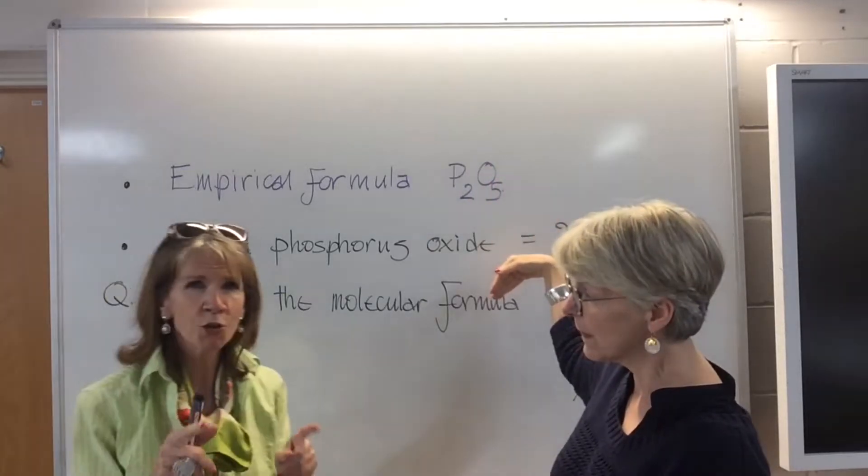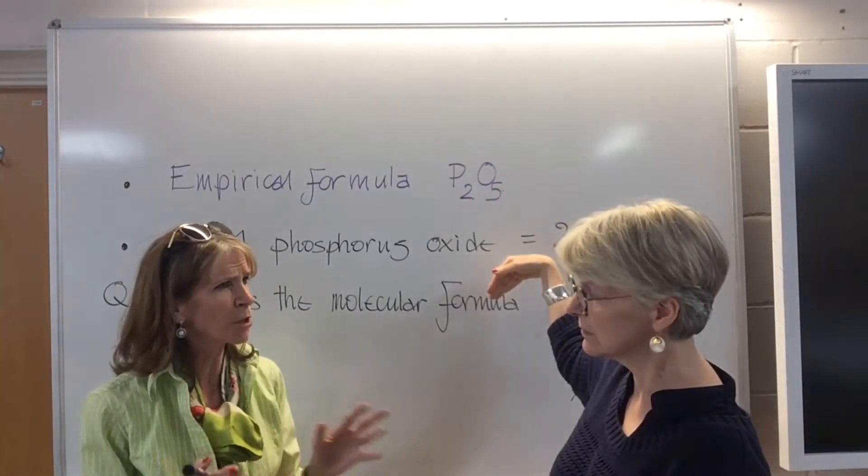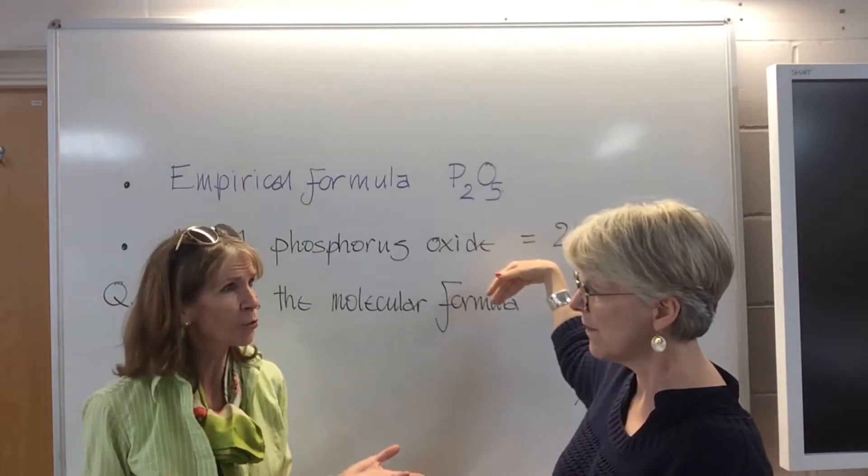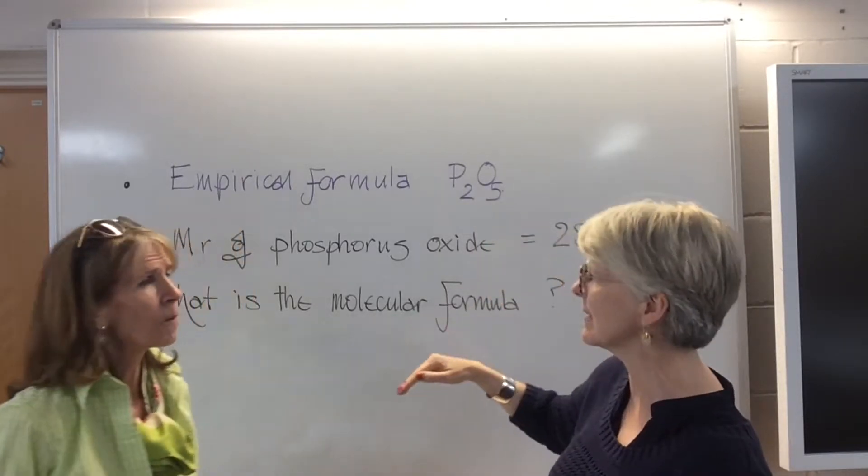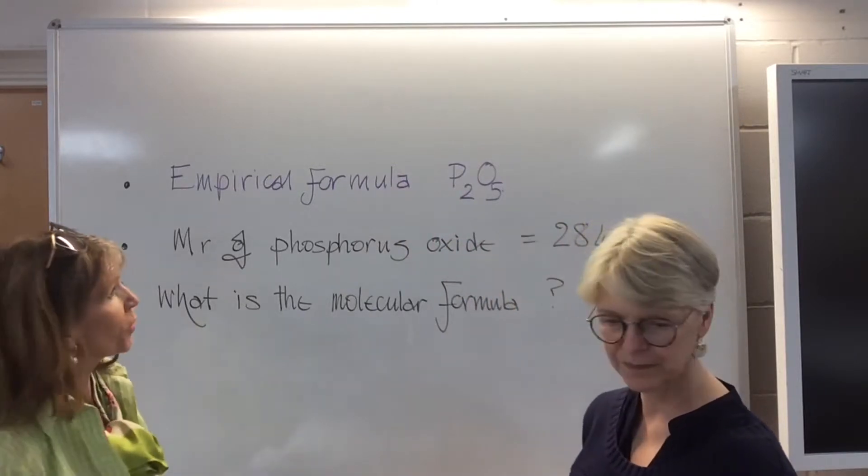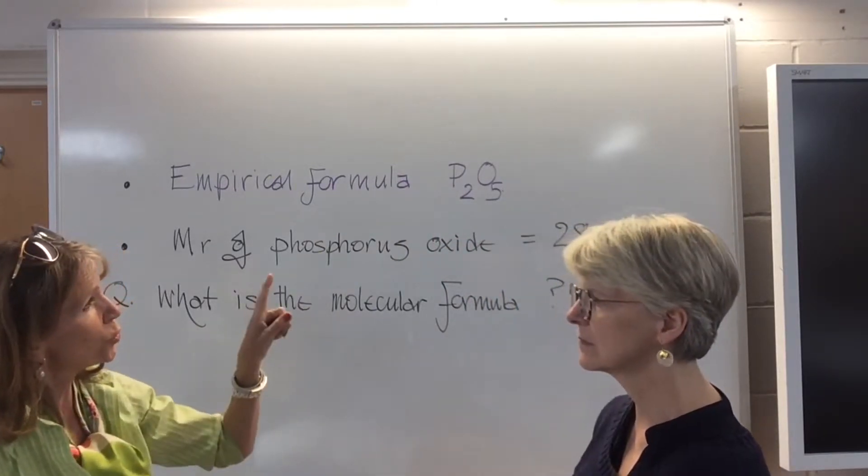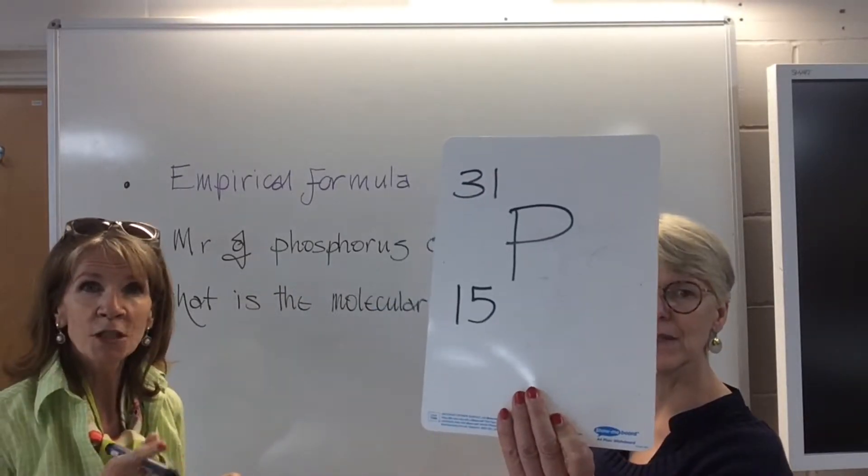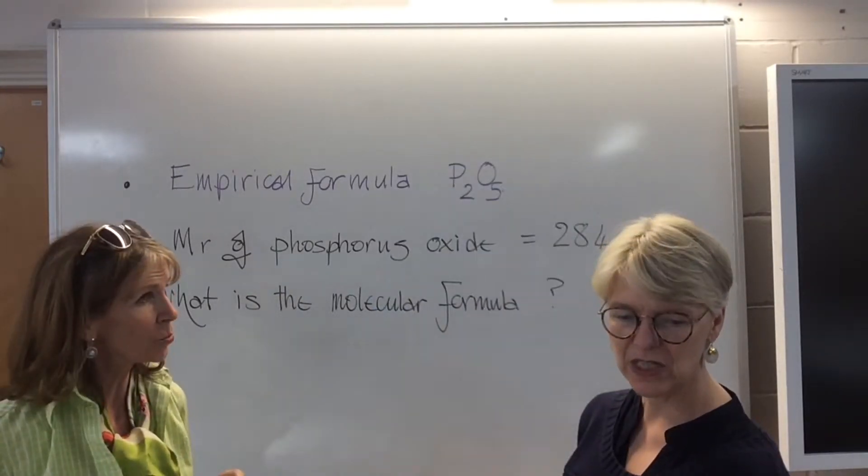All right, so by comparing the two values, then we can work out what the true molecular formula is? Yes, let's do it, it'll be easier. So, working out the mass of the empirical formula. Right, so in the empirical formula, we'll get two phosphorus, and here we have the mass of phosphorus is 31.